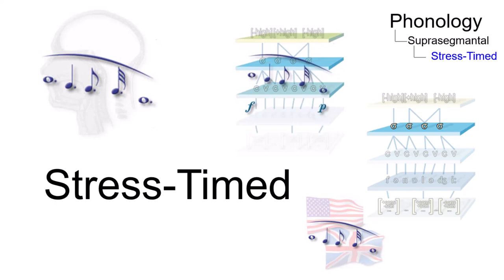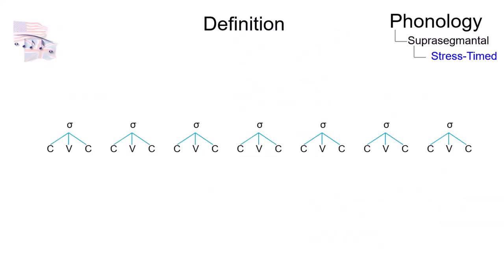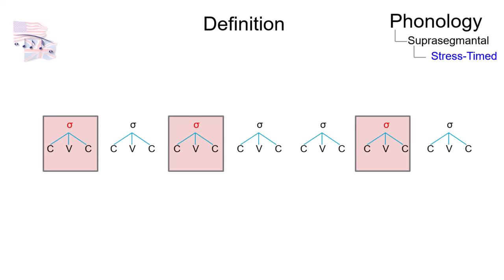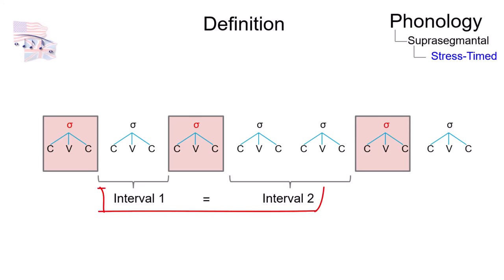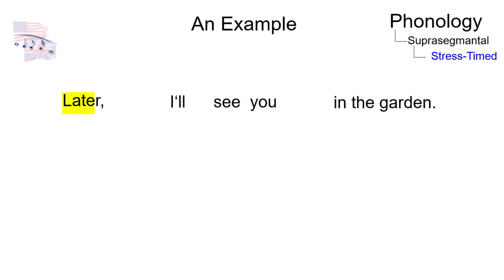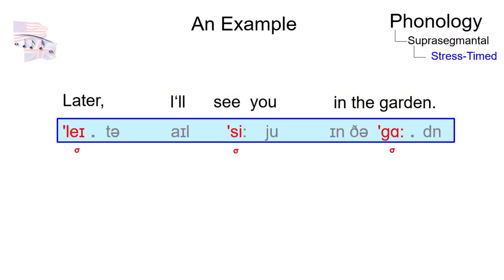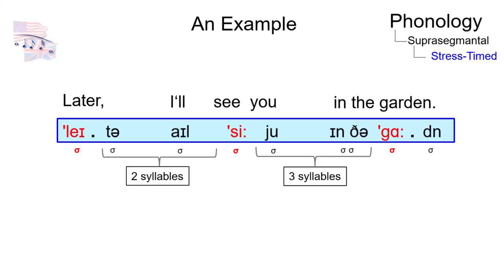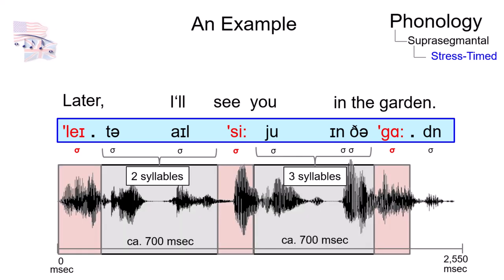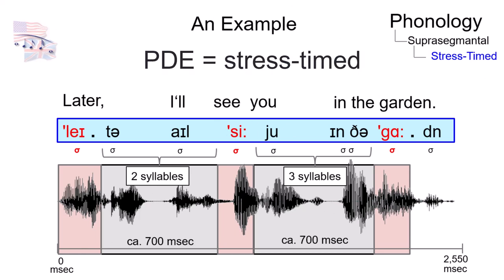A language is defined as stress-timed when the intervals between stressed syllables, at a given rate of speaking, are perceived as approximately equal in length. The utterance 'later I'll see you in the garden' has three stressed syllables. Irrespective of the number of syllables between them, the intervals between the stressed syllables roughly take the same amount of time. The language is stress-timed.